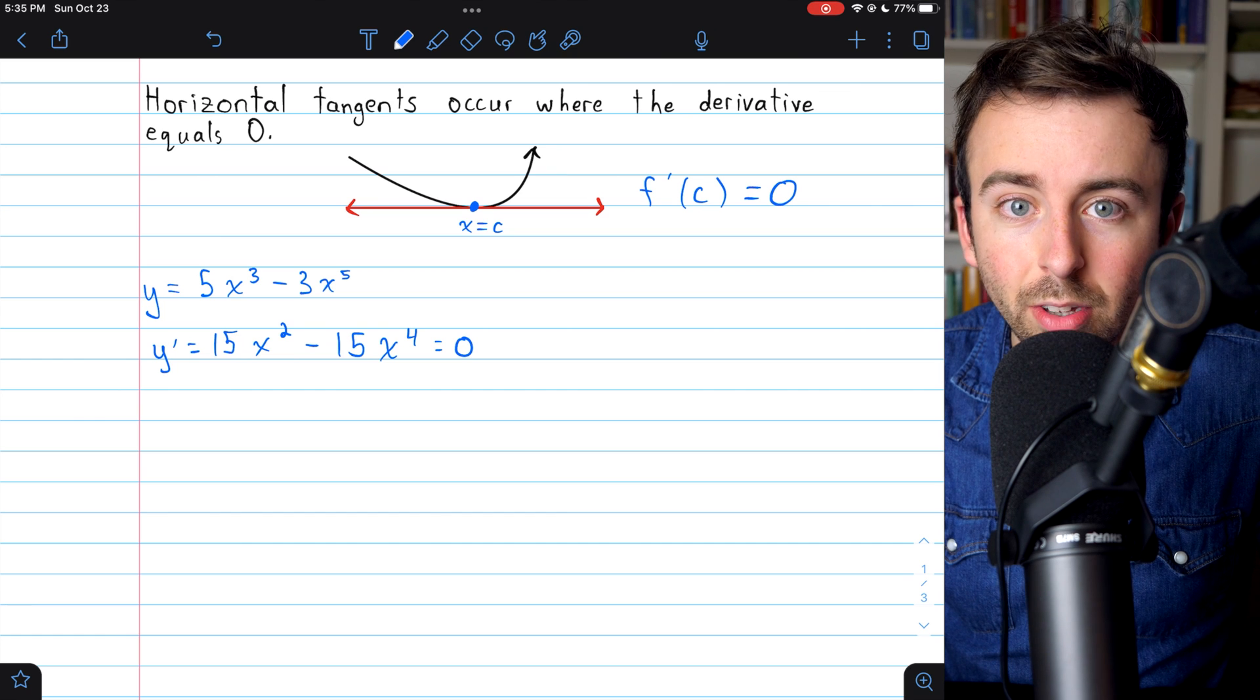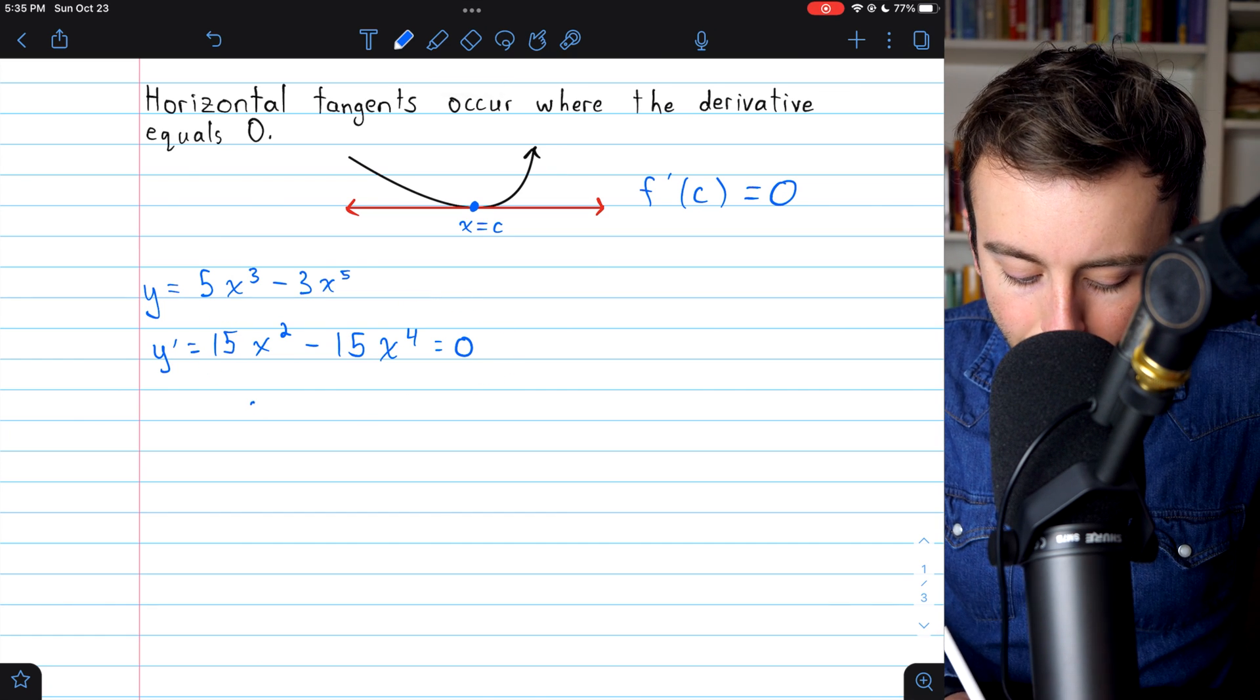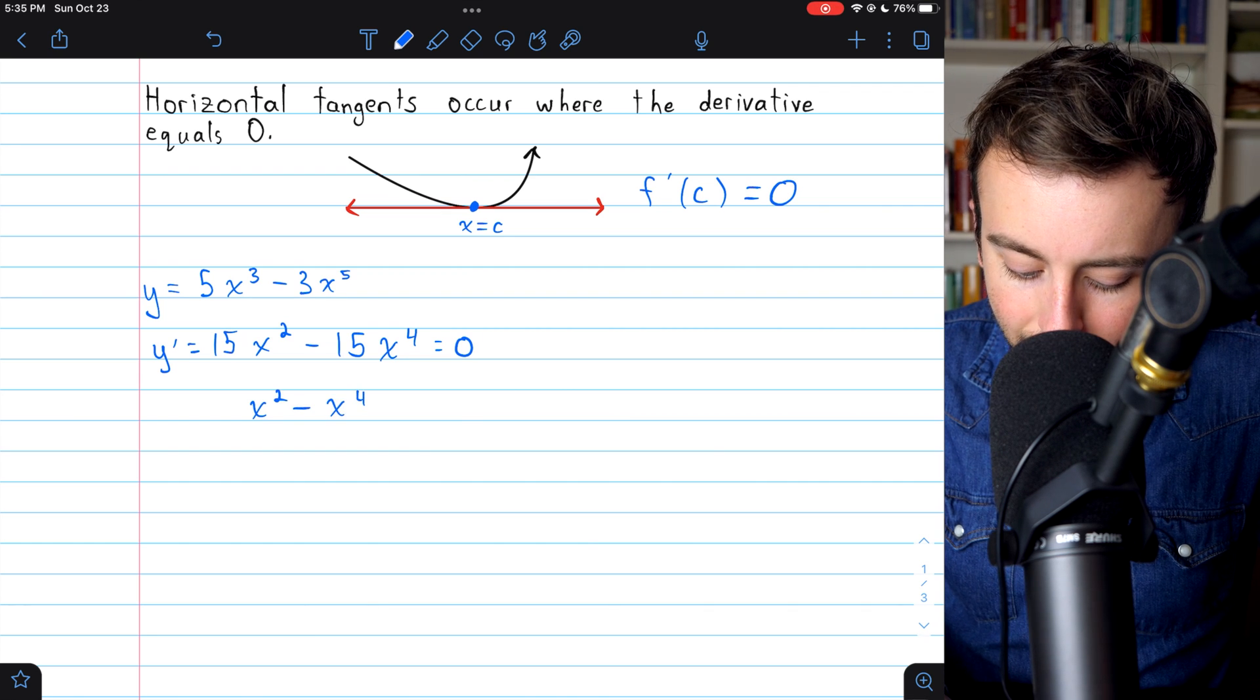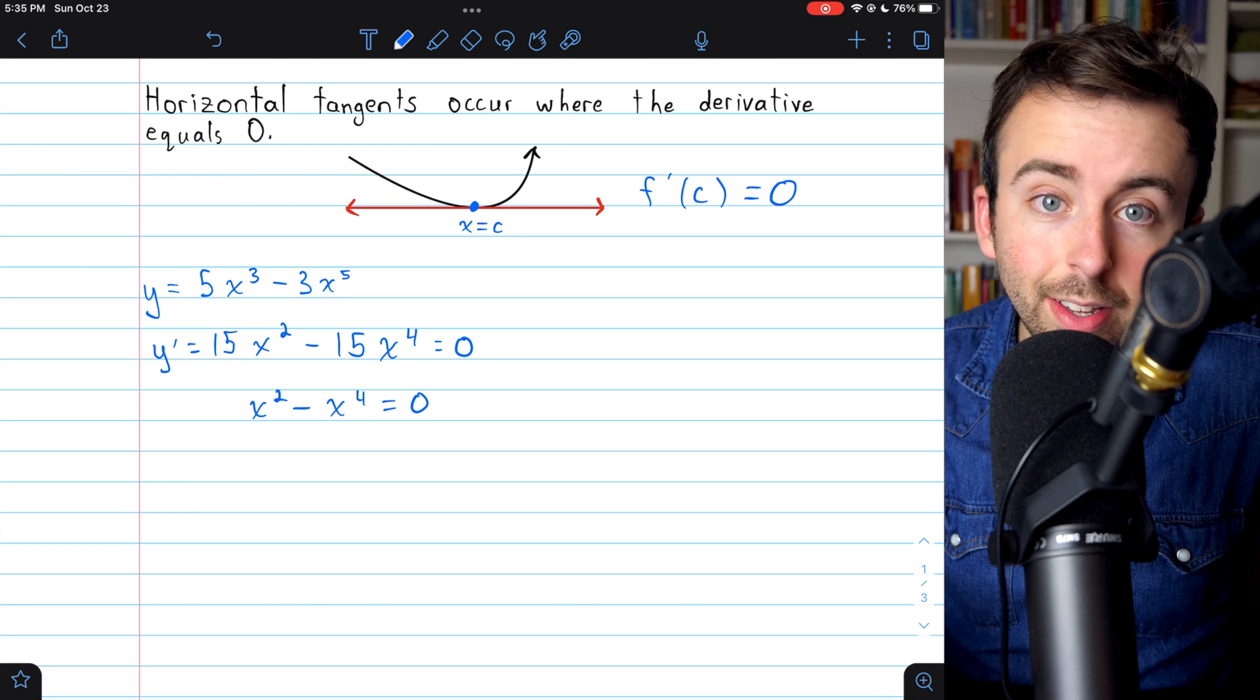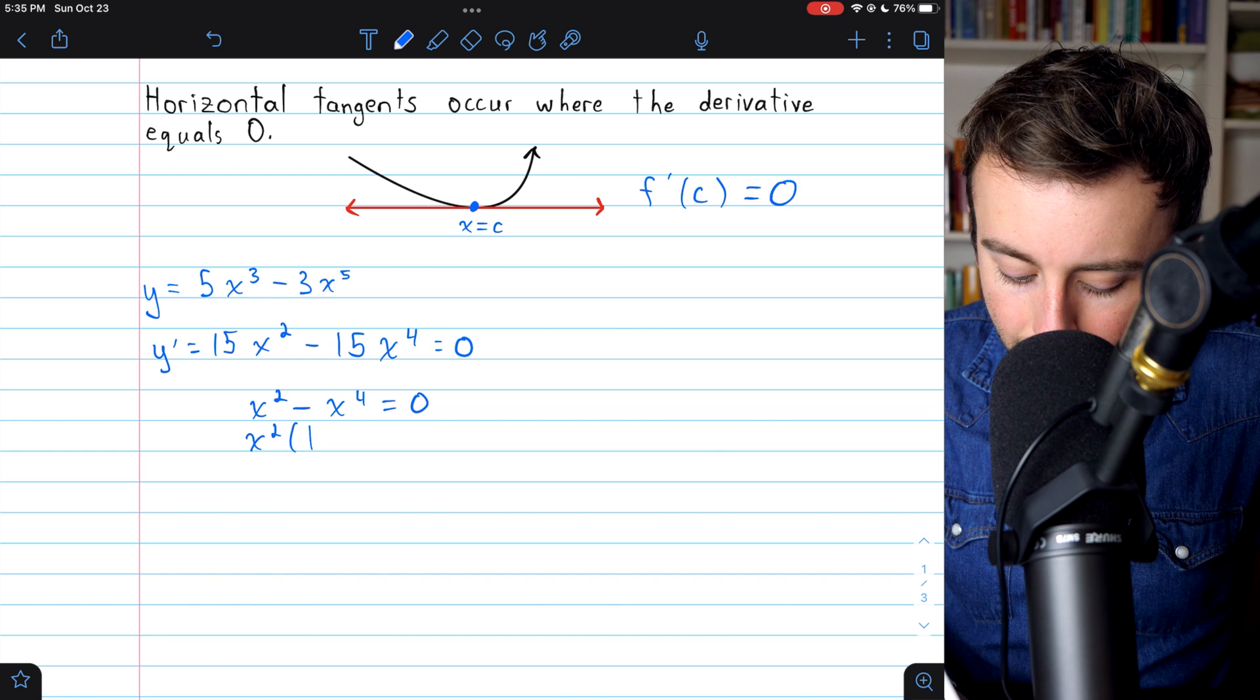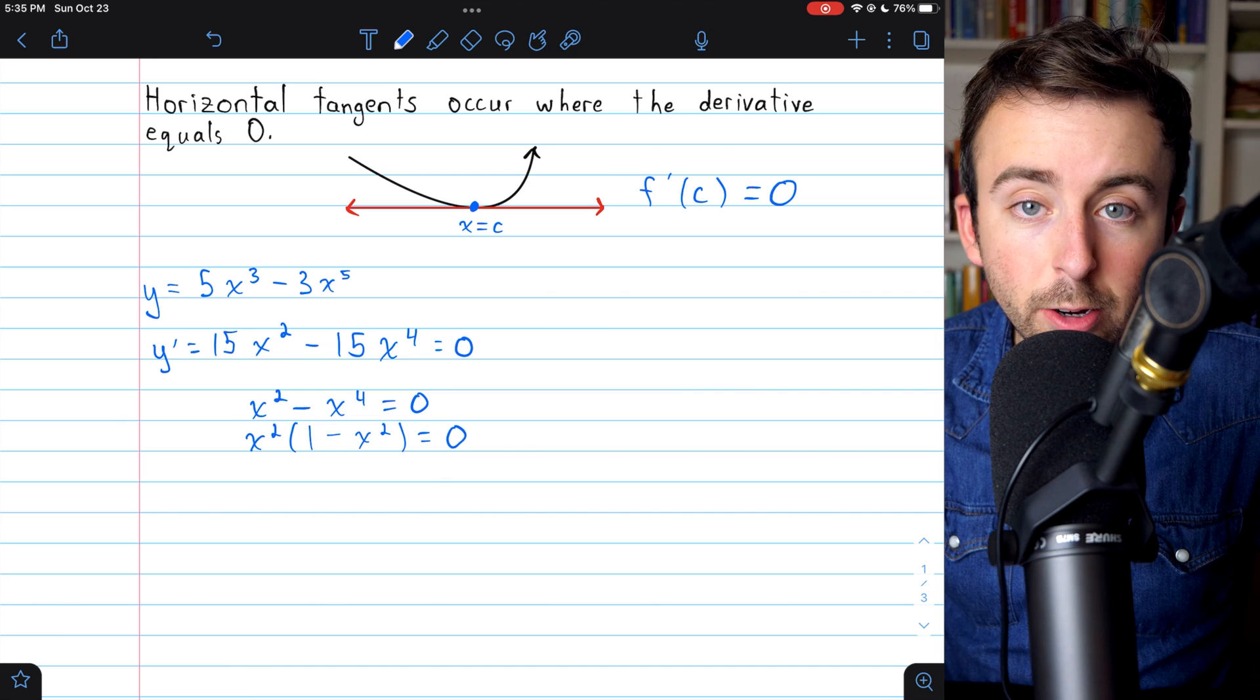So now we just have to solve for x. Let's go ahead and divide both sides of this equation by 15, which is going to leave us with x squared minus x to the 4th equals 0. Then we can factor this. Let's pull out an x squared from both terms. So we have x squared times 1 minus x squared equals 0.